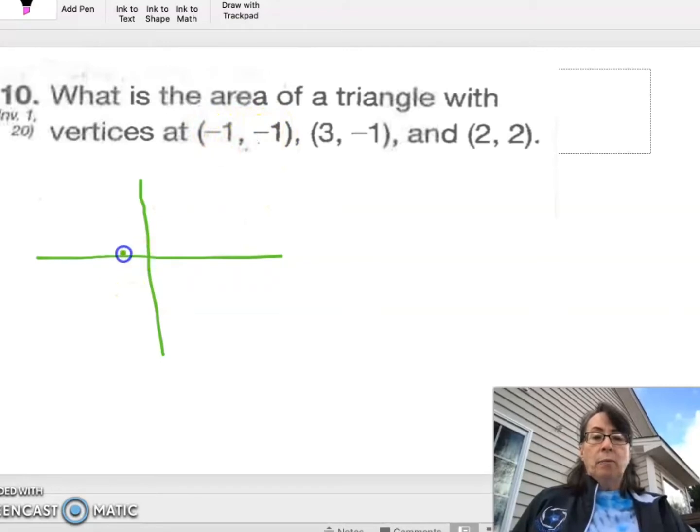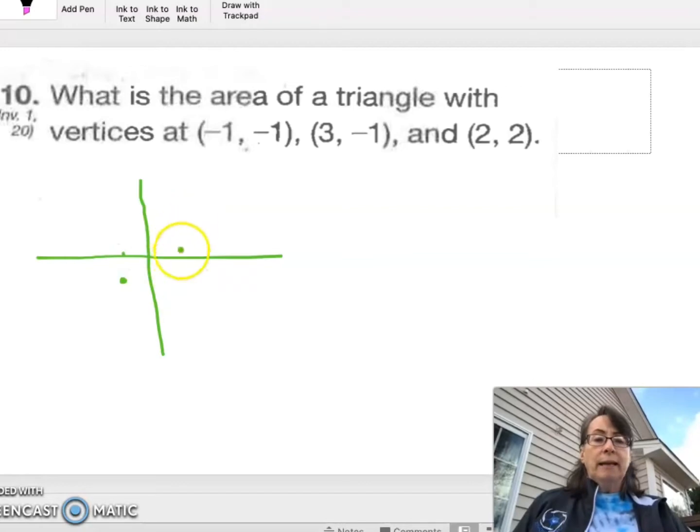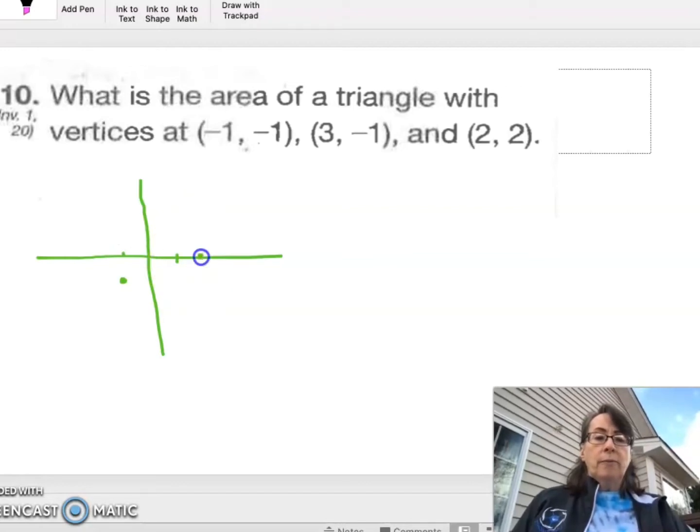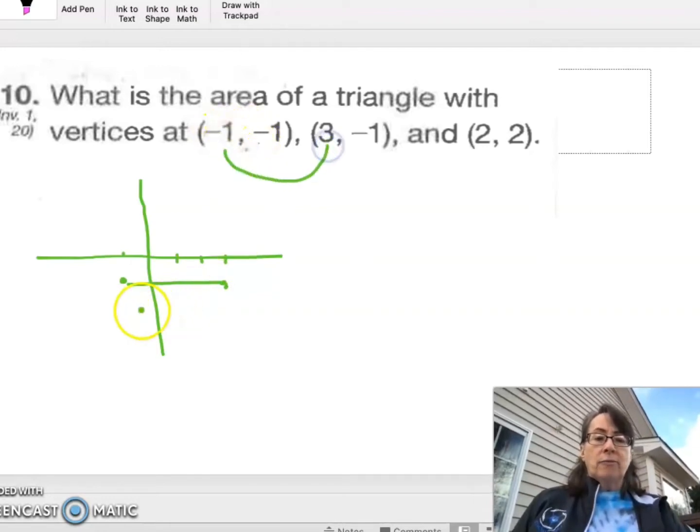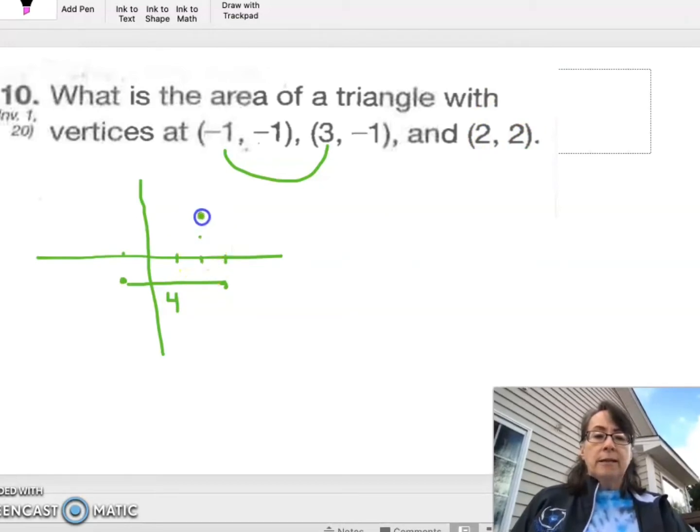So negative 1, negative 1 would be one step to the left and one step down. And then 3, negative 1 would be 1, 2, 3 steps to the right and one step down. Both of these points are one step down and from negative 1 to 3 is 4 steps across. And then 2, 2 is the third point of our triangle.